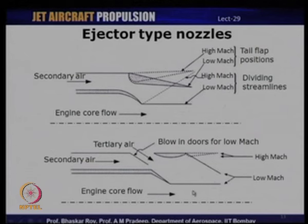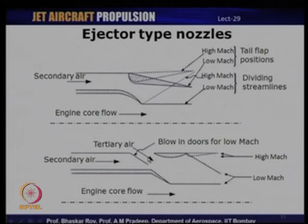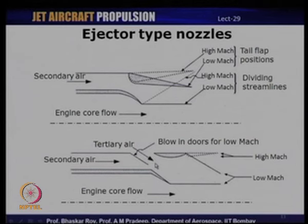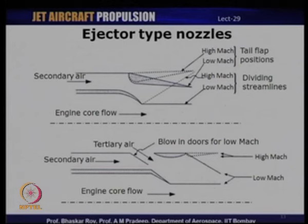The same effect is also possible using a tertiary airflow, where additional air — also known as tertiary air — is adjusted using what is known as a blow-in door. This is used for lower Mach numbers to achieve just a convergent nozzle for subsonic operation. As the Mach number increases, the flap gets deflected and we have a convergent-divergent nozzle geometry which can give higher Mach numbers or a supersonic flow.